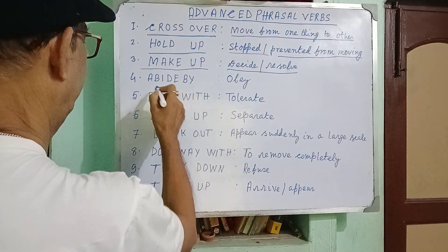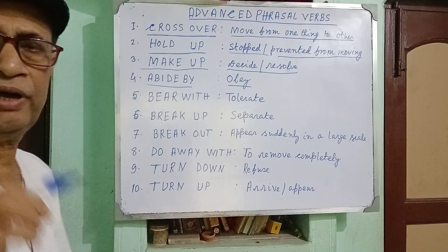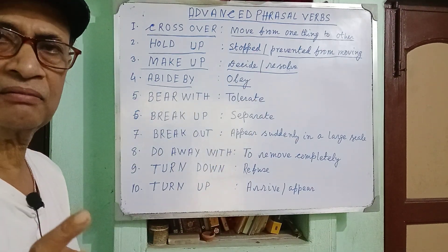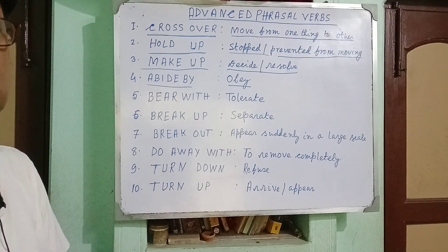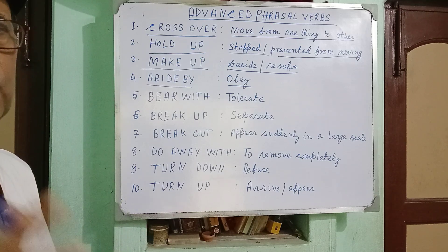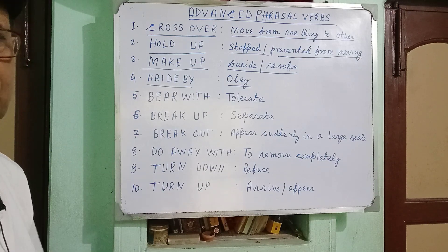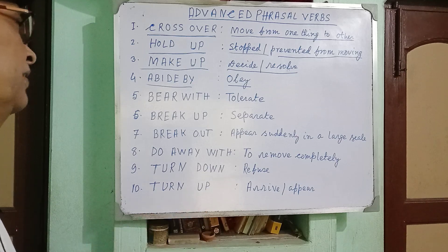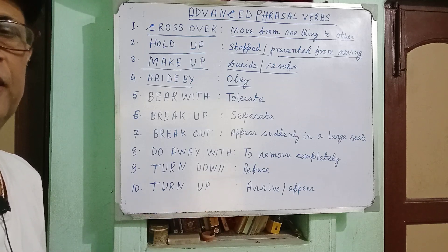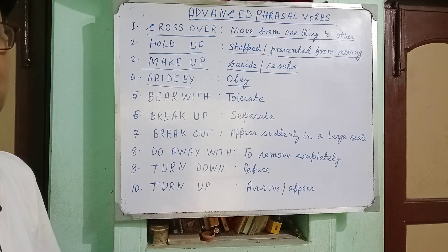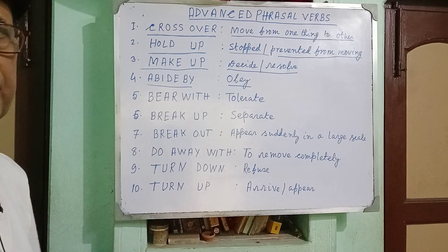The fourth example is 'abide by.' Abide by means to obey. For example, when you are in an educational institution, you must abide by the rules of the college, the rules of the university, etc. All these phrasal verbs are very frequently used in our daily conversation, writing, and spoken English.